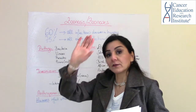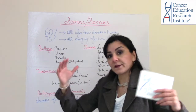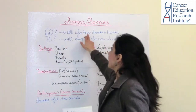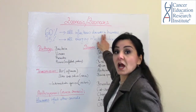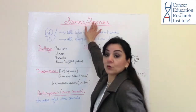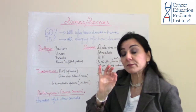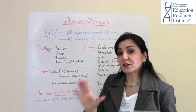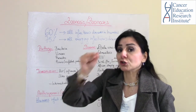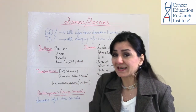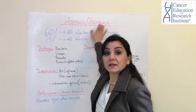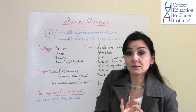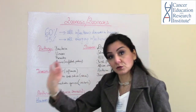So let's talk about facts. The facts are that 60% of all infectious diseases in humans are caused by zoonosis. This is very important. This means that 60% of all infectious diseases in humans, which includes COVID-19, is caused by zoonosis — meaning it has been transferred from an animal to the human.